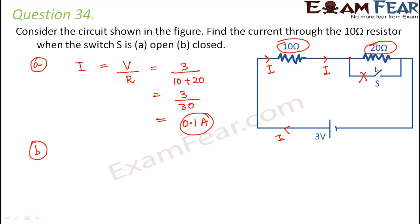Now let us look at the second scenario when the switch is closed. Once the switch is closed, current will also flow through the circuit. Most of the current will flow through this part because when the current reaches the junction it has two options — go straight through the resistor or follow the path with no resistor. Current will prefer the path with no resistor.